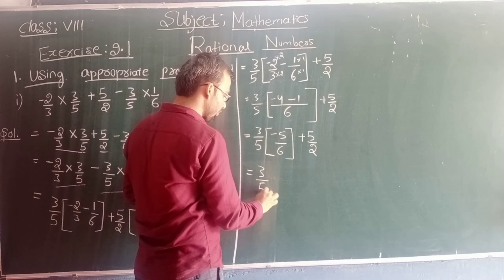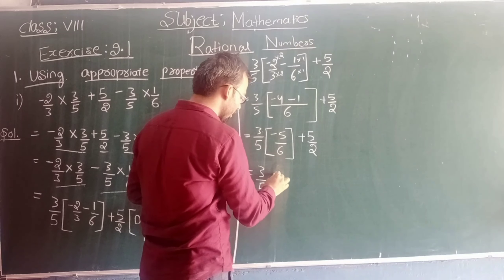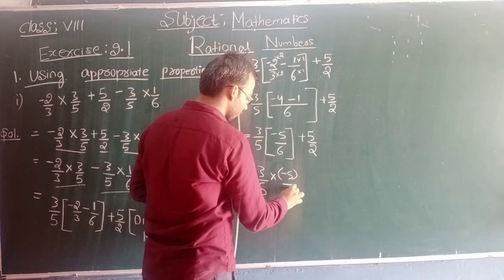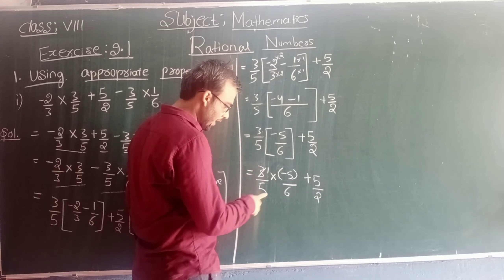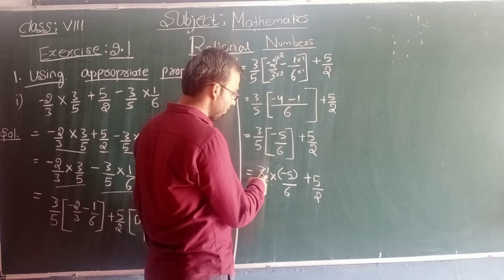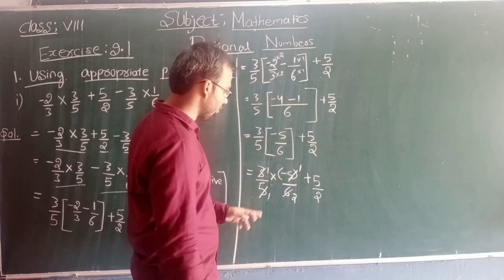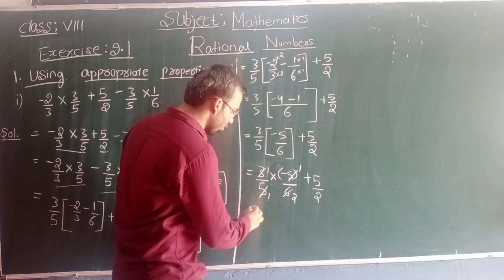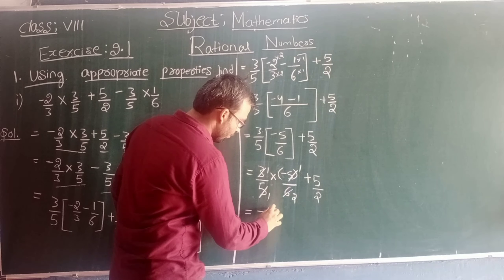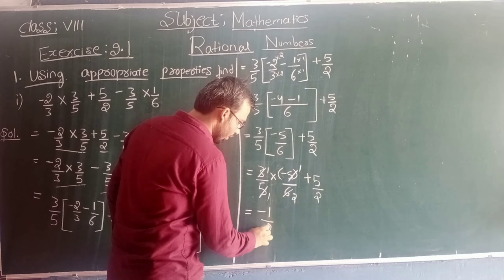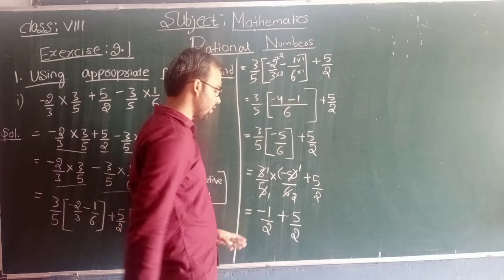This can be written as a multiplication. This bracket represents multiplication. So it can be written like this. Now, as there is a multiplication sign between these two numbers, we can cancel. 3 ones are 3, and 3 twos are 6. Now, 5 ones are 5 and 5 ones are 5. If a negative sign is there, we can still cancel. 5 ones are 5. So what is remaining? 1 into minus 1 is minus 1. 1 into 2 is 2. So minus 1 by 2, plus 5 by 2 — write this as it is.